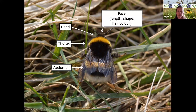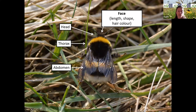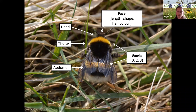We need to have a look at the face — some bees have very long faces because they have long tongues, and some are very short-faced. This affects which plants they can get nectar from. There might be colored hairs on the face, particularly in males. We need to look at how many colored bands there are on the body — on both the thorax and abdomen, normally two or three. We also need to look at what color the tail is and how much of the abdomen it covers.